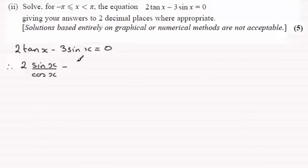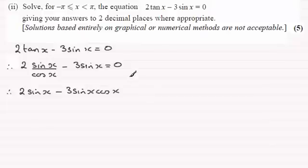And then we've got this term here minus 3 sin x is equal to 0. Now, if I multiply through by cos x, then what I've got is 2 sin x for the first term, then we get minus 3 sin x cos x and then it's going to be equal to 0.